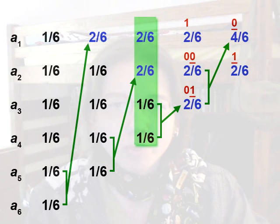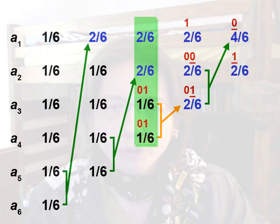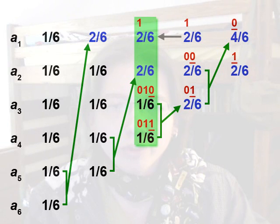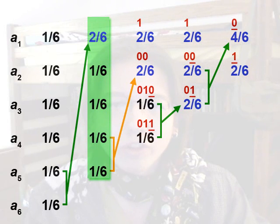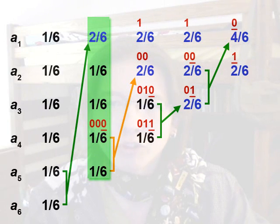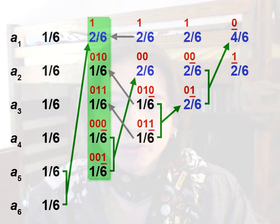Continuing to the next list to the left: the bottom-most 2 in 6 from the previous list came from 1 in 6 and 1 in 6 in this list. Since that 2 in 6 was numbered 01, the numbers for these two will start with 01, giving 010 and 011. We carry over the number 1 for the other 2 in 6, and the number 00 for the remaining 2 in 6 in this list. Moving to the next list: the second 2 in 6 came from the bottom-most 1 in 6 and 1 in 6, and since that 2 in 6 was numbered 00, these two are numbered 000 and 001. The numbers for the other 1 in 6 values are carried over from the previous list.